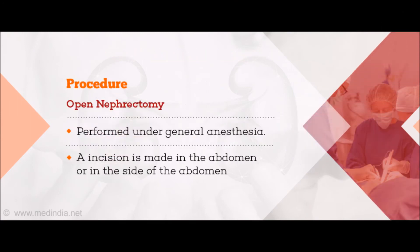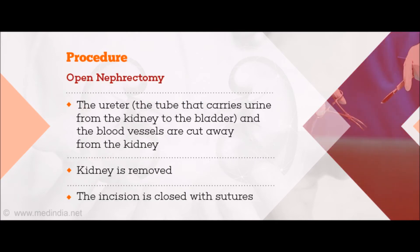Procedure for Open Nephrectomy: It is performed under general anesthesia. An incision is made in the abdomen or in the side of the abdomen. The ureter — the tube that carries urine from the kidney to the bladder — and the blood vessels are cut away from the kidney. The kidney is then removed and the incision is closed with sutures.